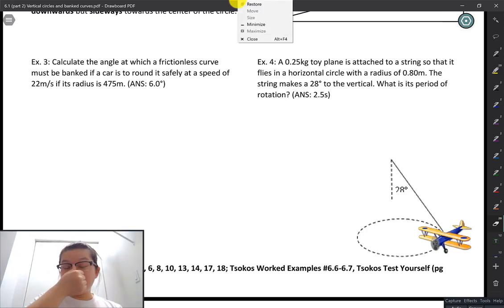Hey, welcome back to FanMama Physics. We are going to do example four in 6.1 part two. This is banked curves, but this one is another force is going to provide that diagonal force, allowing your object to stay moving around in a circle.